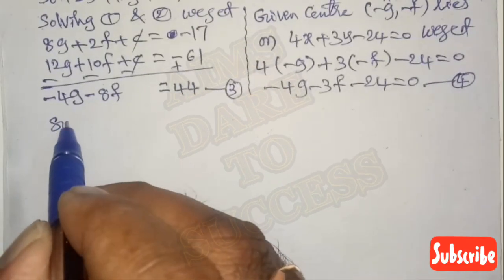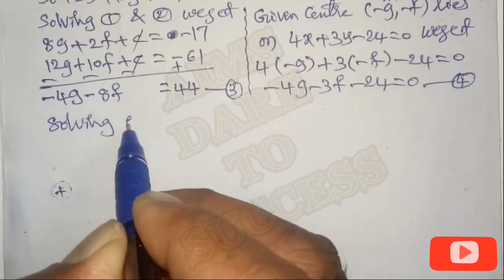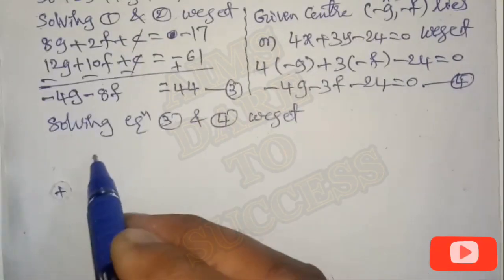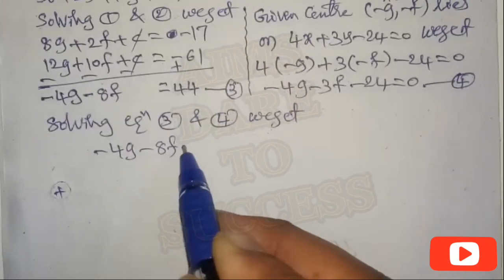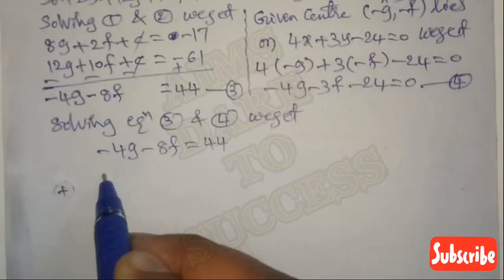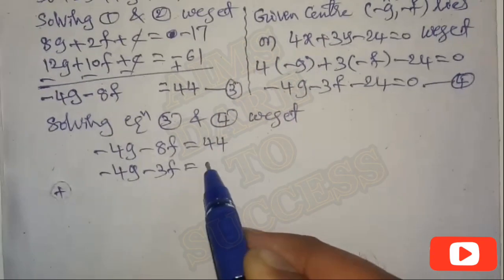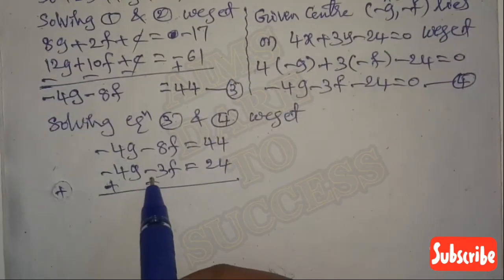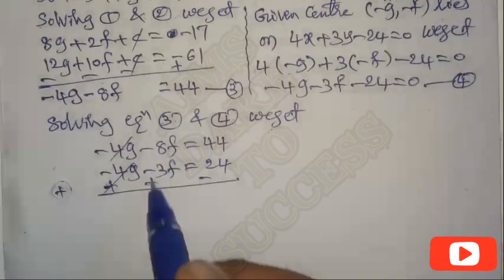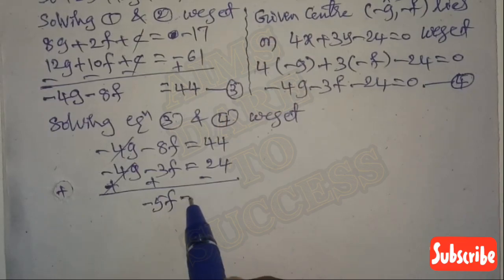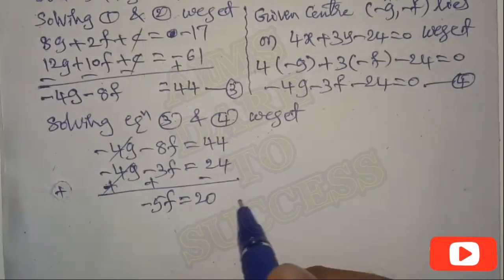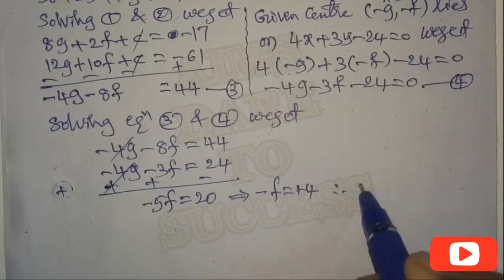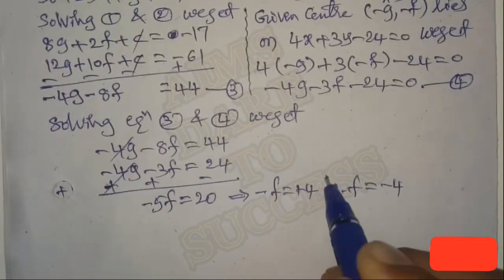Now solve Equations 3 and 4 to get the f value. Equation 3: -4g - 8f = 44. Equation 4: -4g - 3f = 24. Subtracting: -8f - (-3f) = 44 - 24, so -5f = 20. Therefore f = -4.